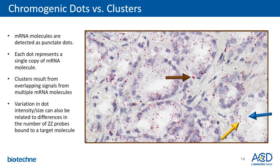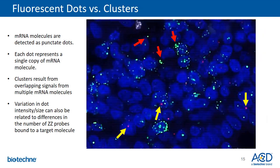The dot size depends on the number of ZZ probe pairs that bind to a target sequence. Sometimes when sample RNA quality is compromised and RNA sequence is fragmented, fewer ZZs can bind, resulting in a smaller dot. But it still detects as one mRNA molecule, regardless of dot size. Furthermore, a cluster is a result of overlapping signal dots from multiple mRNA molecules. The same concept applies to RNAscope multiplex fluorescent assay — one dot represents a single copy of an mRNA molecule. We usually call a cluster of individual signal dots a transcription hotspot.